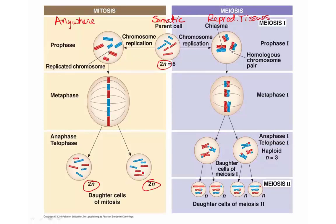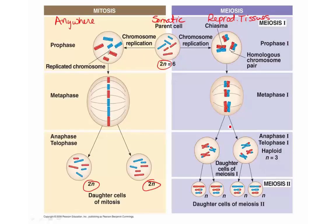Where we start with a diploid cell in mitosis, we end up with two daughter cells that are also going to be diploid. On the meiosis side, we do get a pairing of the homologous chromosomes — that's where the tetrad structure comes from. We then line up the tetrad on the metaphase one plate so that initially we separate the homologous chromosomes. Separation of the homologous chromosomes is what happens in meiosis one, followed by a second division where those daughter cells actually get a separation of the sister chromatids. In the end, we end up with four daughter cells that are all haploid.